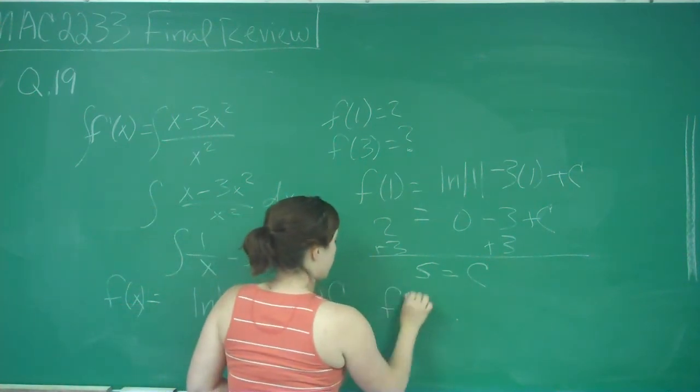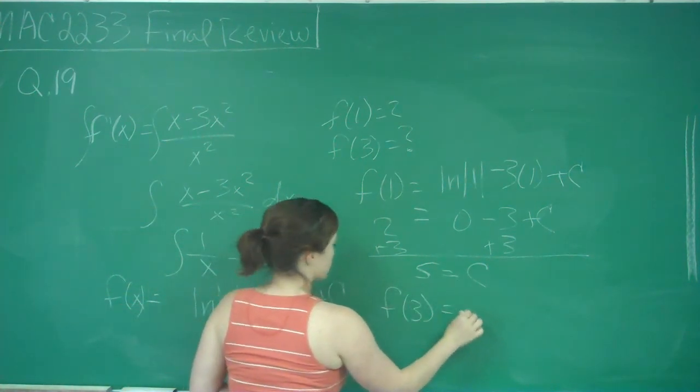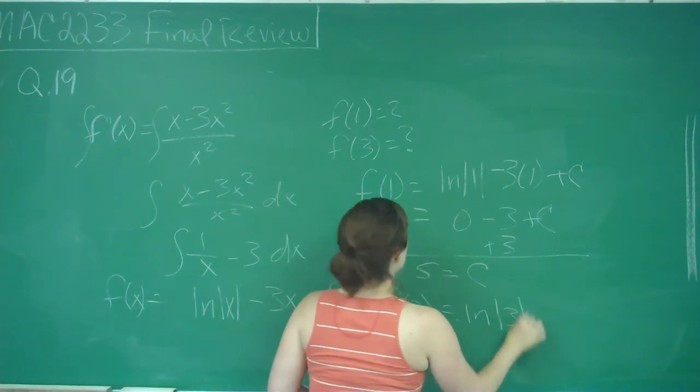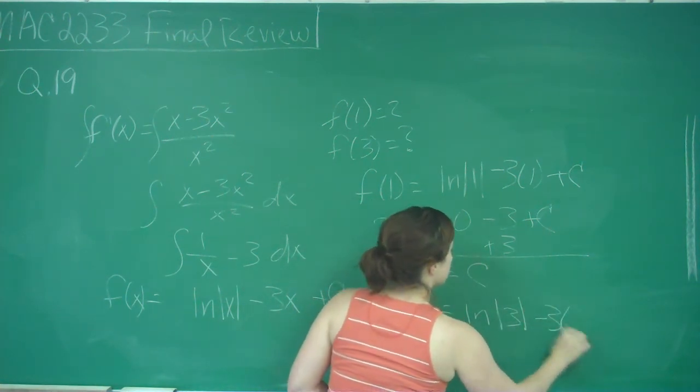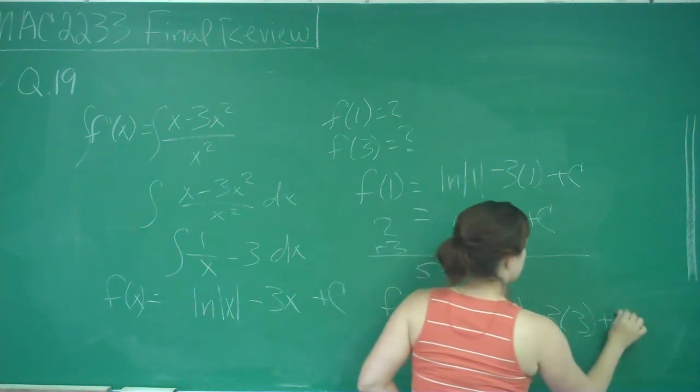So f(3) will be equal to ln|3| - 3(3) + 5.